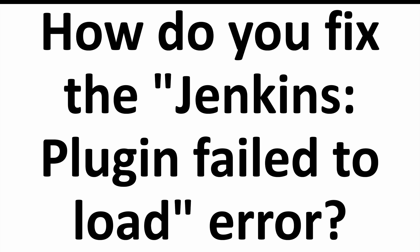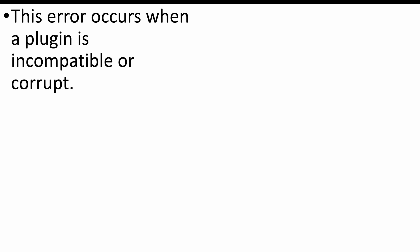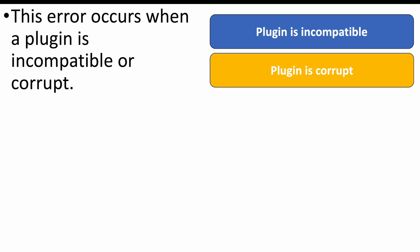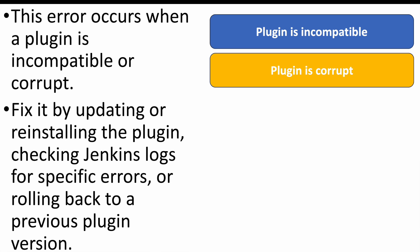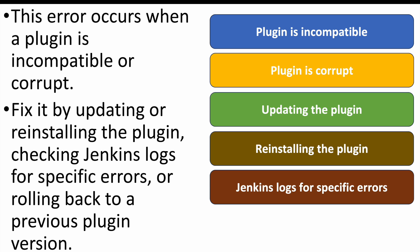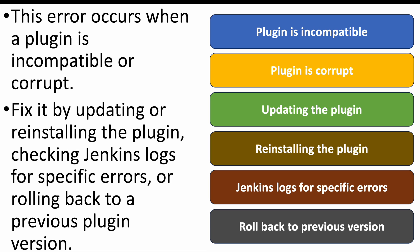The next question: how do you fix the 'Jenkins plugin failed to load' error? This error occurs when a plugin is incompatible or corrupted — the version may no longer be supported or the plugin itself is corrupt. To fix it, update the plugin to the latest version, reinstall it, or roll back to a previous stable version. Check the Jenkins log for specific plugin-related errors.